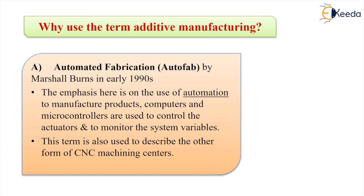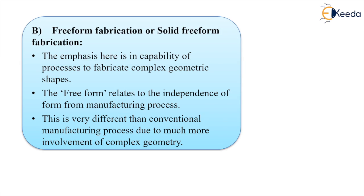This term is also used to describe other forms of machining centers such as CNCs — Computer Numerical Control systems. The second term is Freeform Fabrication or Solid Freeform Fabrication. The emphasis here is on the capability of the process to fabricate very complex geometric shapes. Freeform relates to the independence of form from the manufacturing process — whatever the form of the component, we do not have to worry. This is very different from conventional manufacturing due to the much greater involvement of complex geometries.